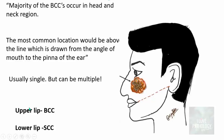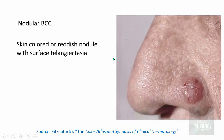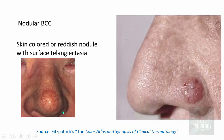Basal cell carcinomas usually occur singly but can be multiple. Clinically they can be nodular — skin-colored or reddish nodules with surface telangiectasia, meaning you can find dilated blood vessels on the surface. Whenever you find such lesions with a nodular elevated appearance and dilated surface vessels, consider basal cell carcinoma as the first differential diagnosis. This is very characteristic of the nodular type.